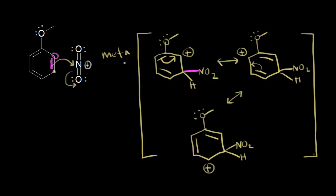The actual sigma complex is a hybrid of these three resonance structures. Since I can only draw three, this sigma complex is not as stable as the one for an ortho attack. The sigma complex for an ortho attack was more stable because we could draw four resonance structures, whereas here we can only draw three.